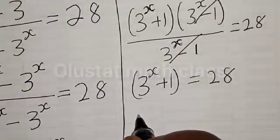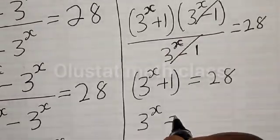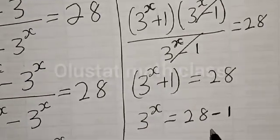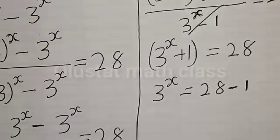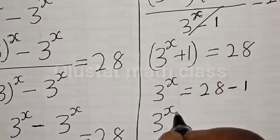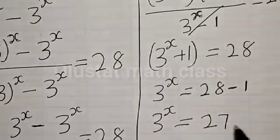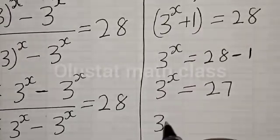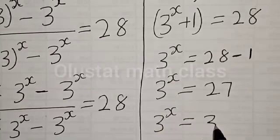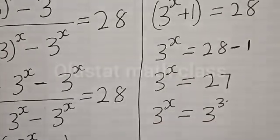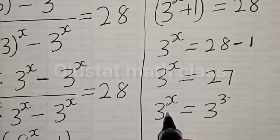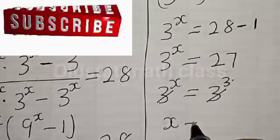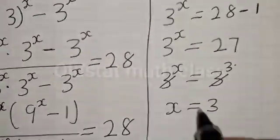Now we have 3 raised to power s is equal to 28 minus 1, and 28 minus 1 is equal to 27. Then we have 3 raised to power s is equal to 27. Since 27 equals 3 raised to power 3, we have the same base, so the bases cancel; therefore s is equal to 3. We've gotten the value of s which is equal to 3.